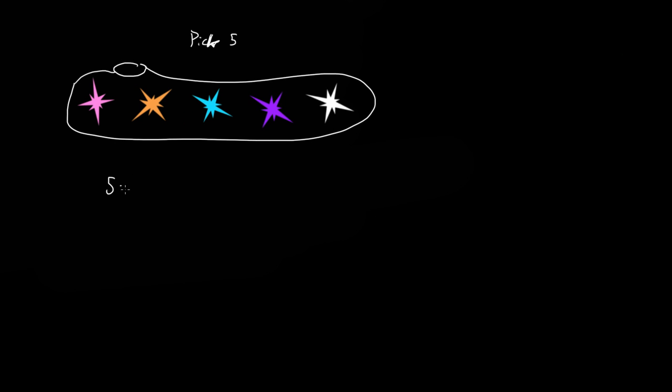Now what we're going to do this time is take one out, look at it, and put it right back in. So if we were to do that five times — if we were to pick five stars — what would be the total number of possible outcomes? Well, right now we have five.